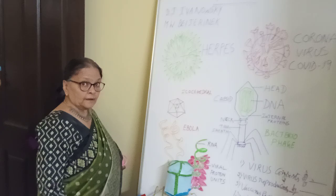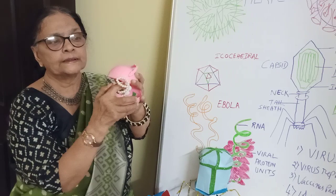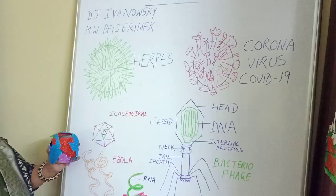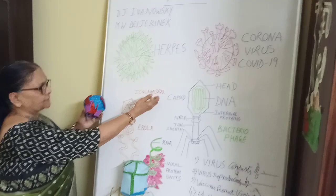A virus has an outer protein coat and an inner genome material, which can be DNA or RNA. A virus's outer coat can have spikes, causing head's disease. The outer coat can also have equilateral triangular projections like icosahedral, causing the disease hepatitis.